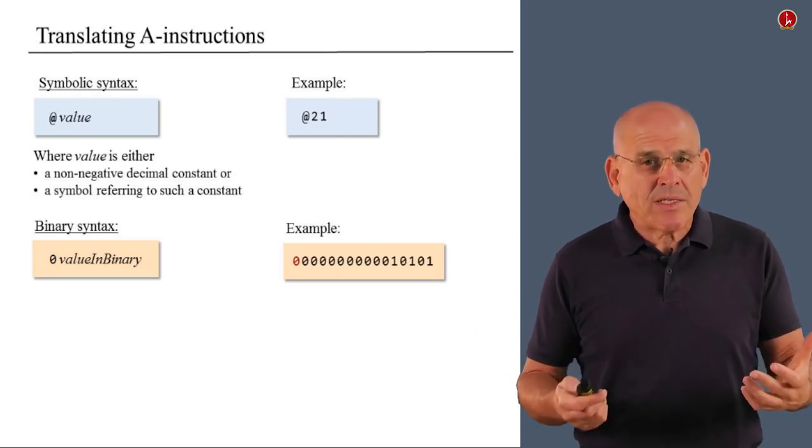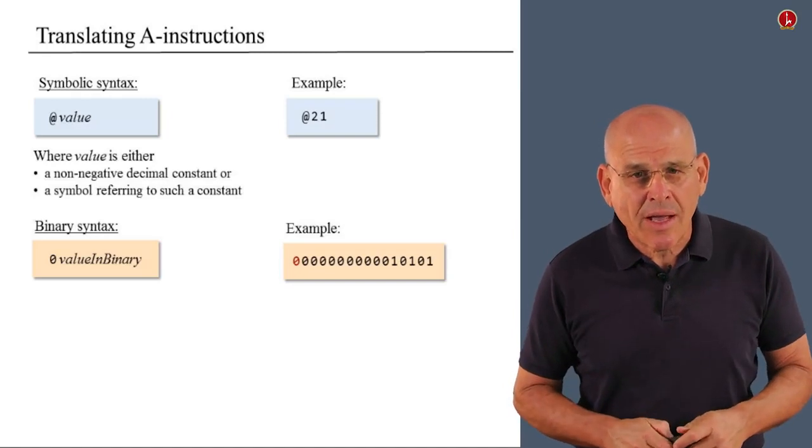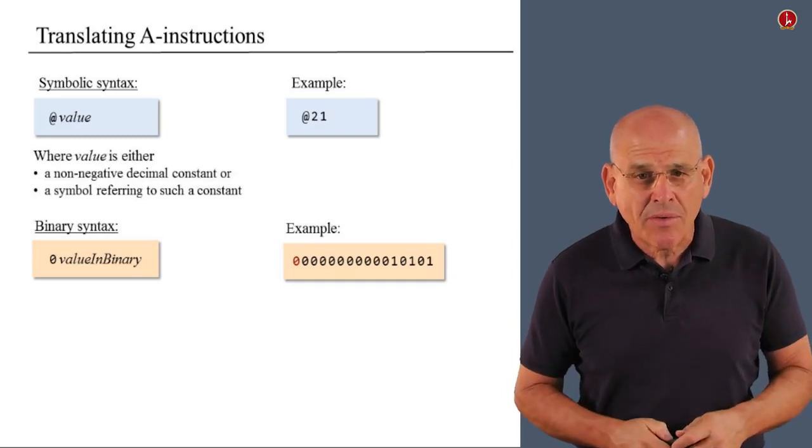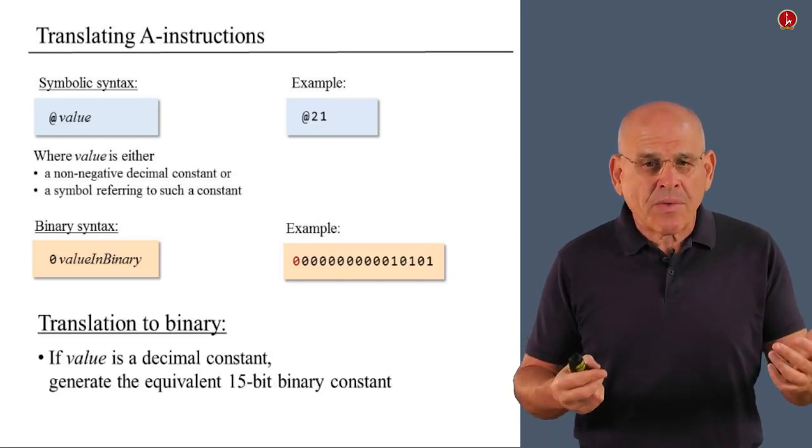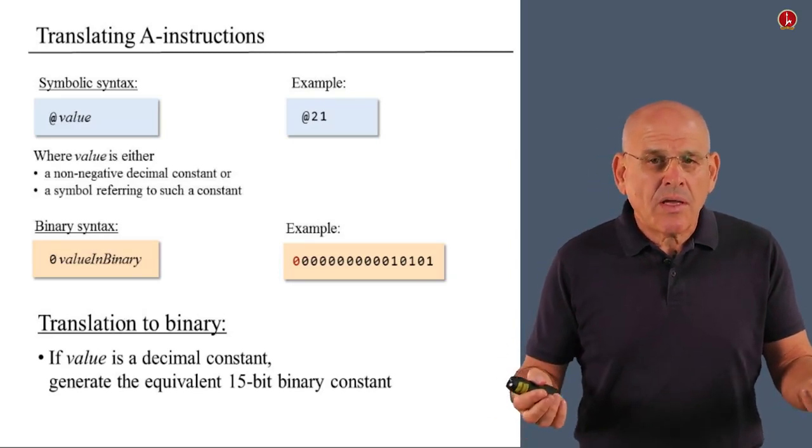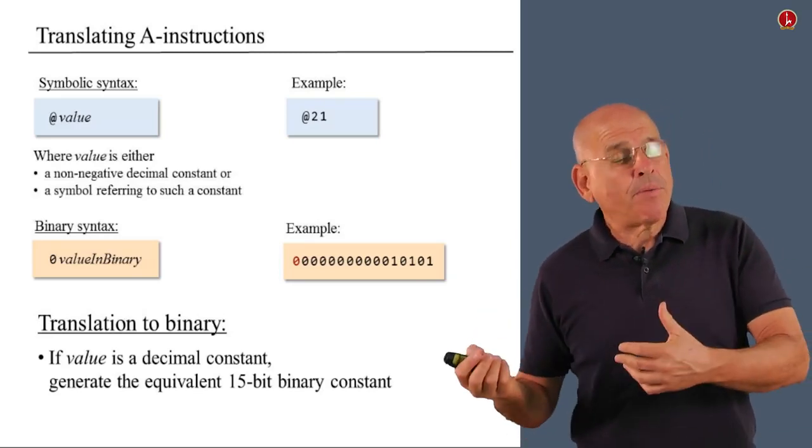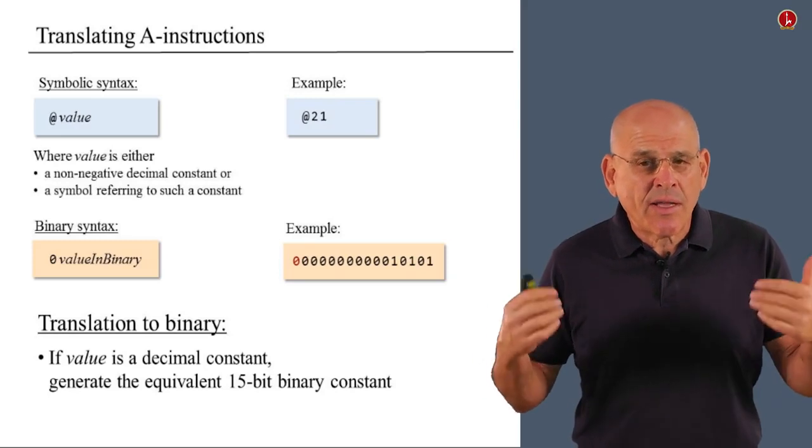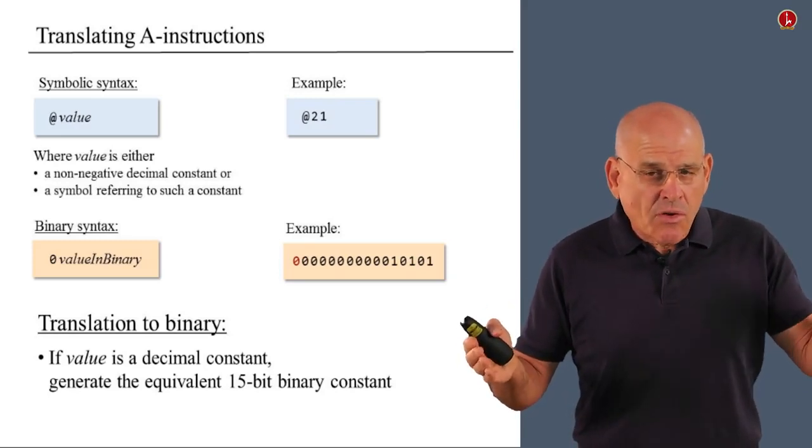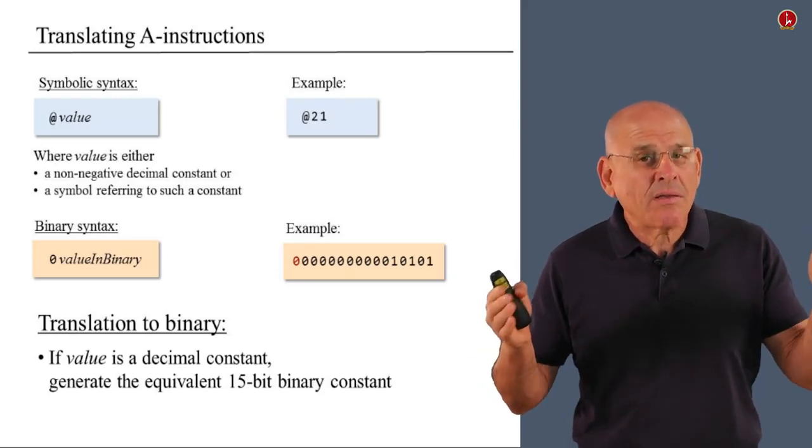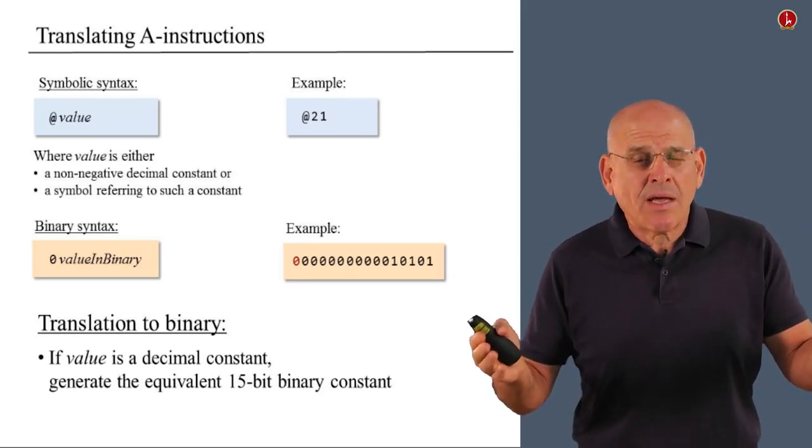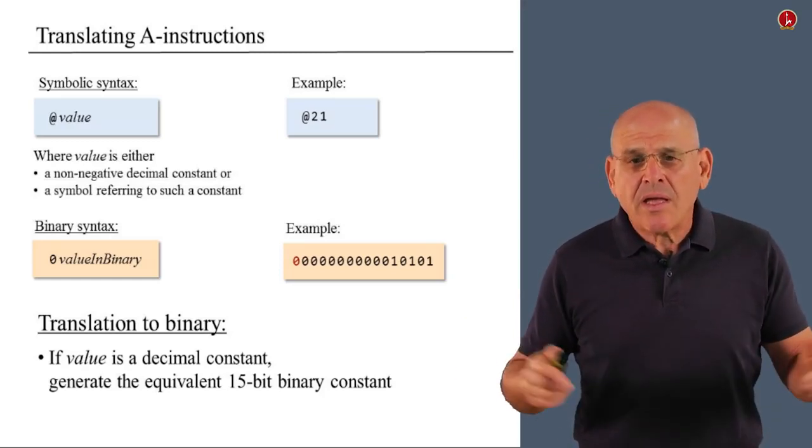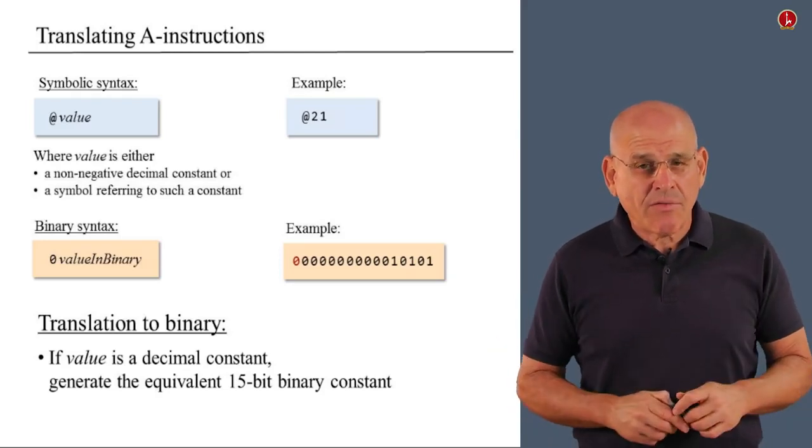Once it gets into actual implementation, the colors once again play no role whatsoever. So, how to translate from symbolic to binary when it comes to an A instruction? Well, if you think about it, the only challenge is to do something with this value. So basically, if the value is a decimal constant, all we have to do is compute the binary representation of this value. Add as many zeros as we need in order to turn it into a 15-bit constant. Add or append the zero op code and that's what is needed, a 16-bit representation of this instruction. So, it's not a big deal, but obviously, we have to do it.